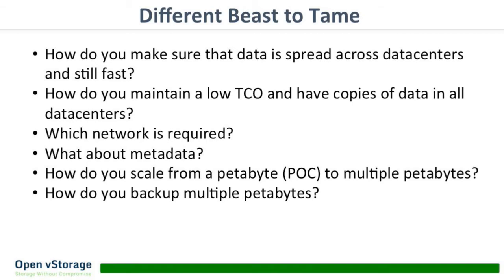If you have five data centers you need a network between them, and those networks need to be fast — that's logical — but we had to answer the question of what network was required. Then there's metadata, which everybody thinks is something natural for volumes of storage, but at scale across data centers it becomes a very hard puzzle. Doing it locally is quite easy with hyperconverged solutions, but across data centers it's a really different and hard task.